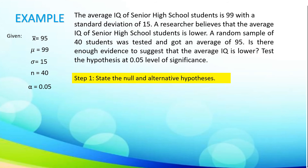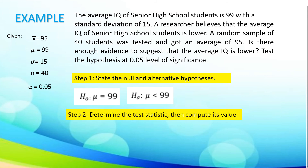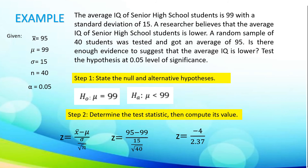Following step 1, state the null and alternative hypothesis: our null hypothesis is mu is equal to 99, and our alternative is mu is less than 99. Let us determine the test statistic and compute its value. Since we are using a one-tailed test, which is the left-tailed test, using the formula z equals x-bar minus mu divided by standard deviation over the square root of n, substituting the given, we have 95 minus 99 divided by 15 over the square root of 40. 95 minus 99 is negative 4, and 15 divided by the square root of 40 is 2.37. We have the z-value, which is negative 1.688.